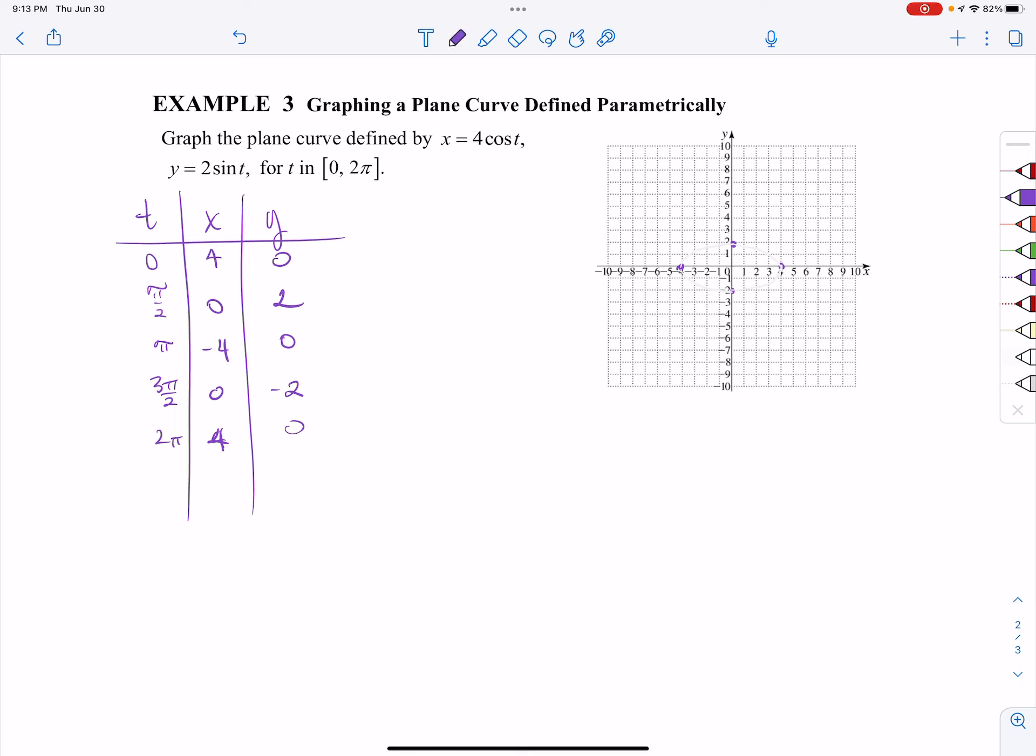So now we can go ahead and plug in our coordinates. We have 4, 0, 0, 2, negative 4, 0, 0, negative 2, and then back to 4, 0. And this ends up being an ellipse.